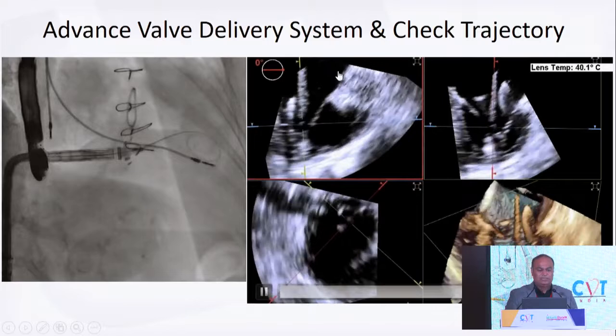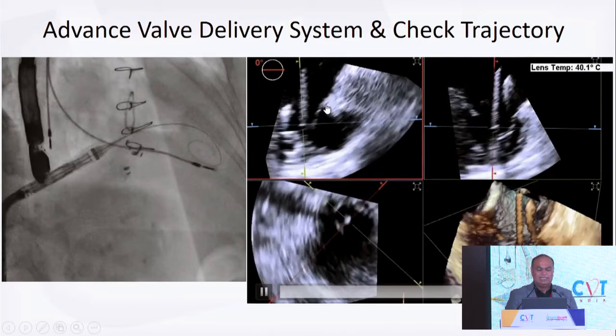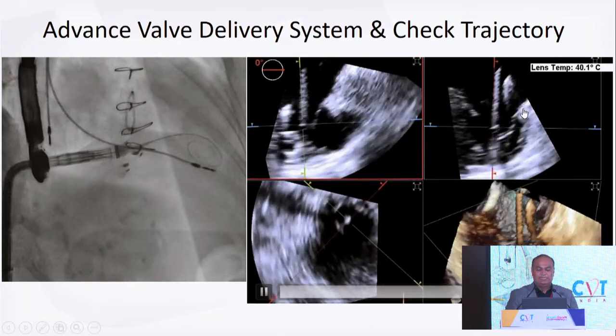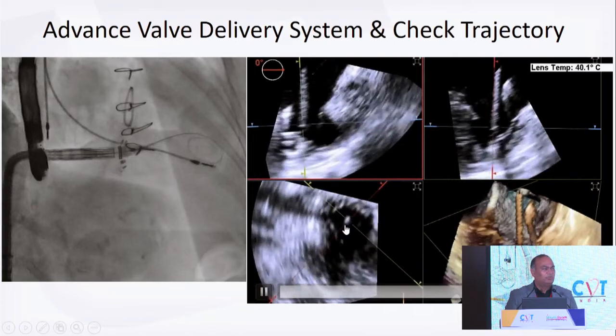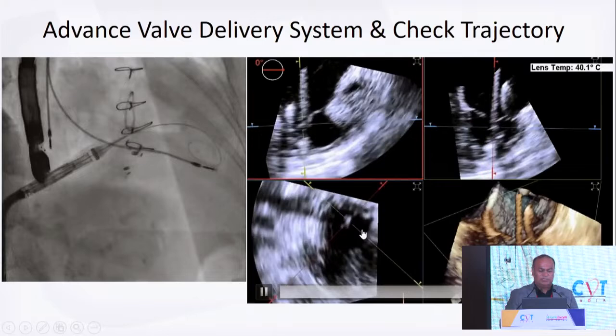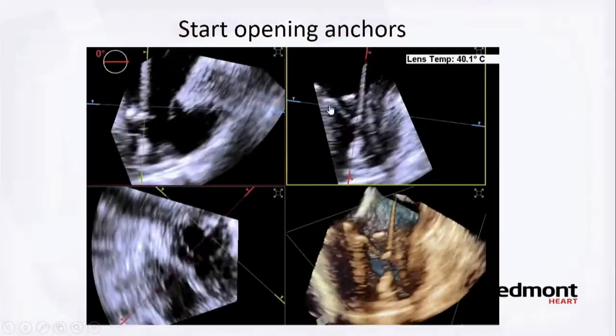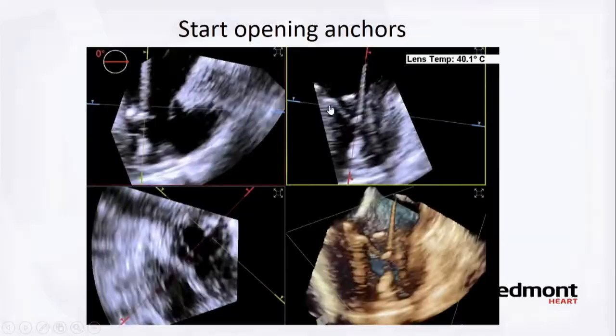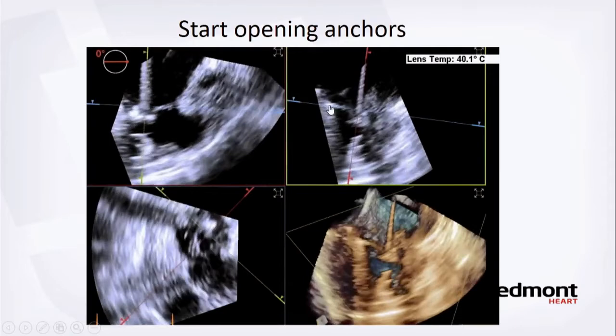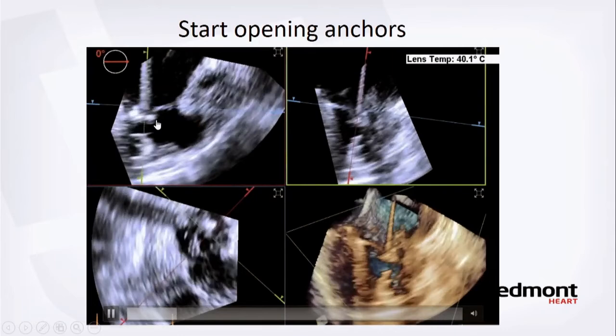Align the catheter: posterior is where the pacemaker lead is, anterior on the other side; on the other view, septal on one side and lateral on the other. In short axis, the catheter should be right in the middle with the pacemaker lead at the post-septal commissure. Once trajectory looks parallel, start opening the anchors — the bright spots on imaging. Before opening, ensure you have enough height above the papillary muscle level.